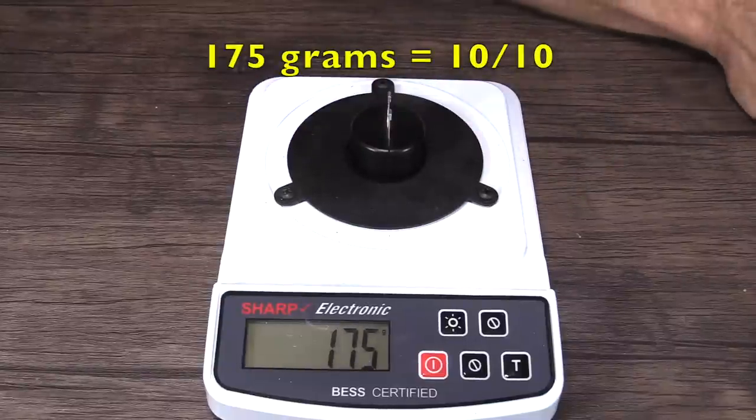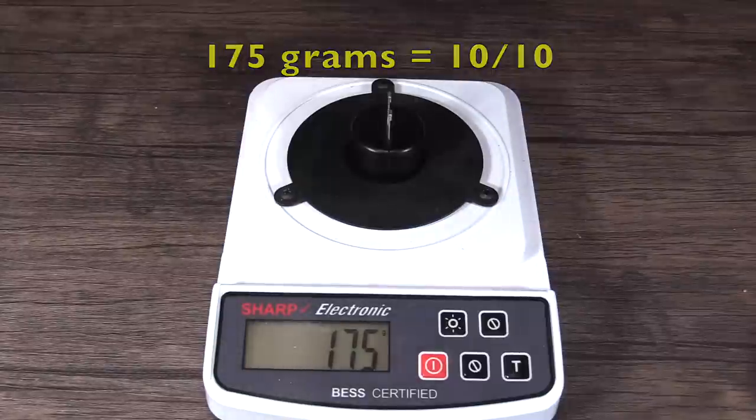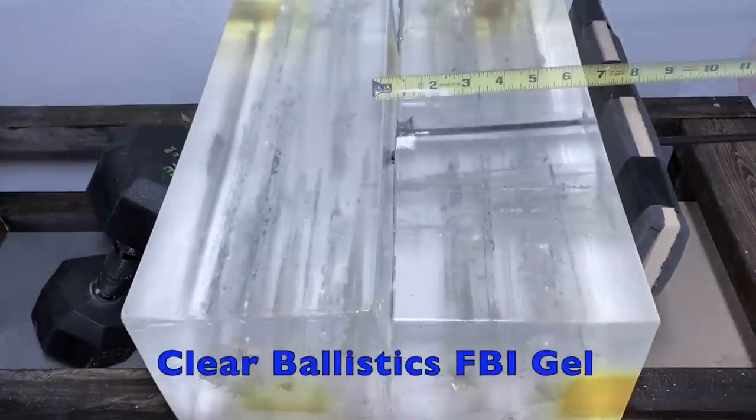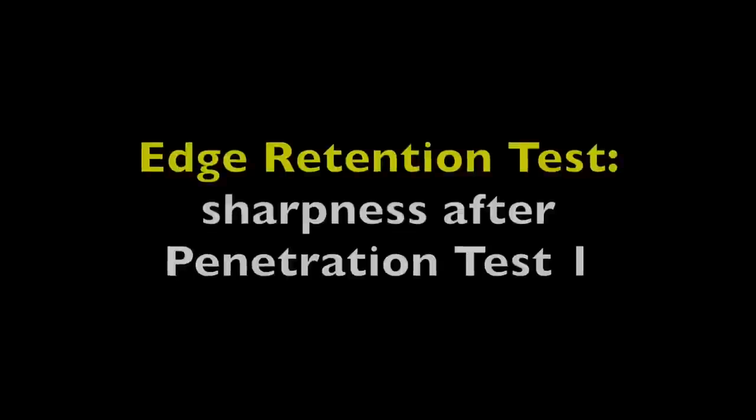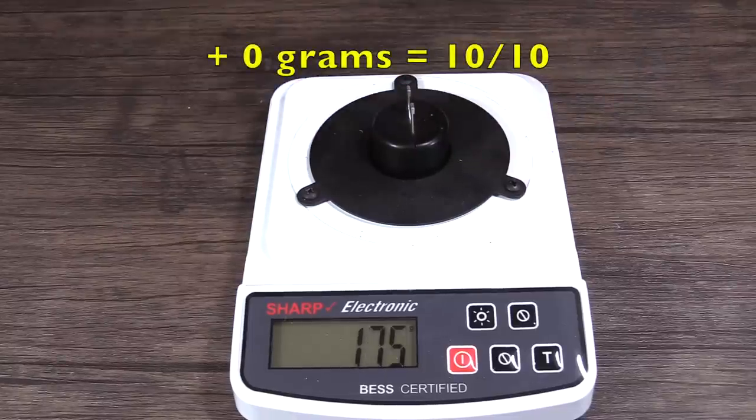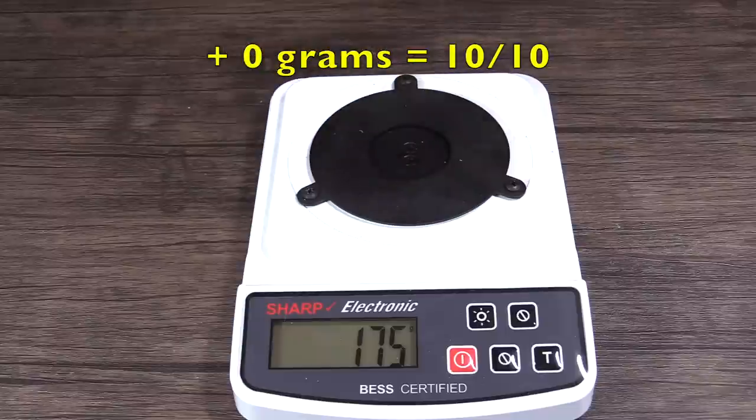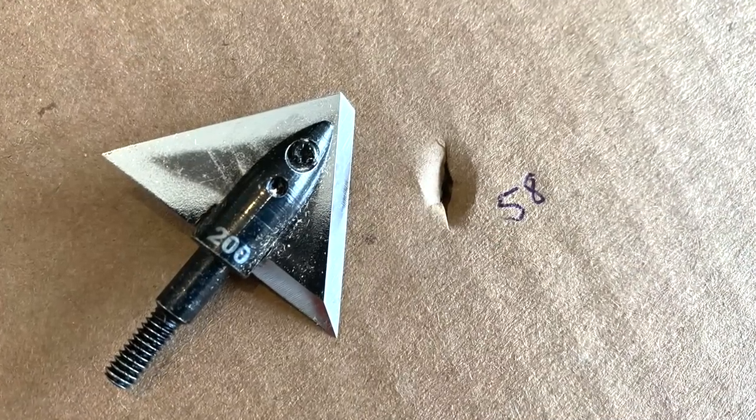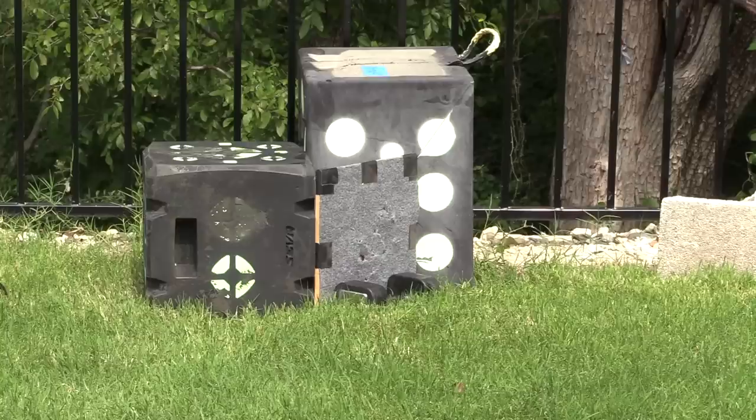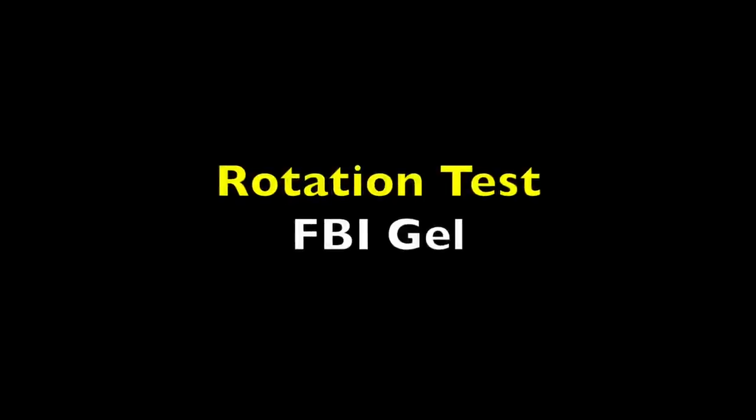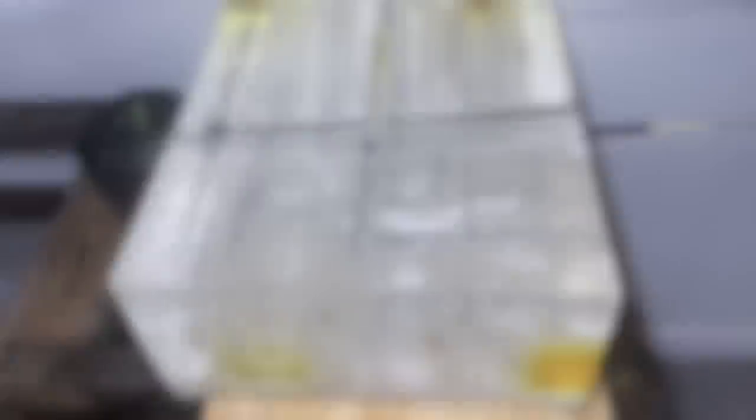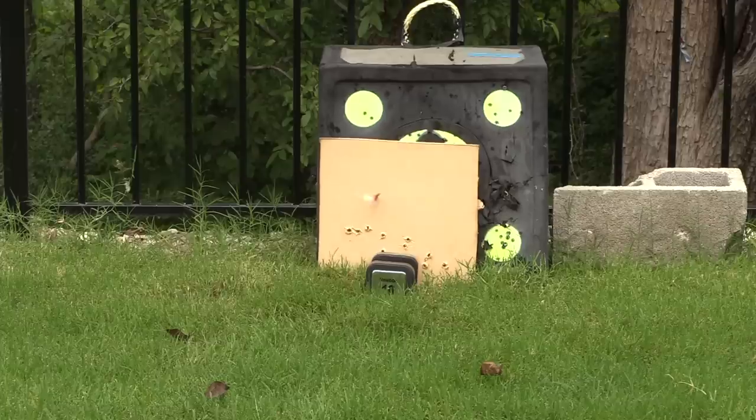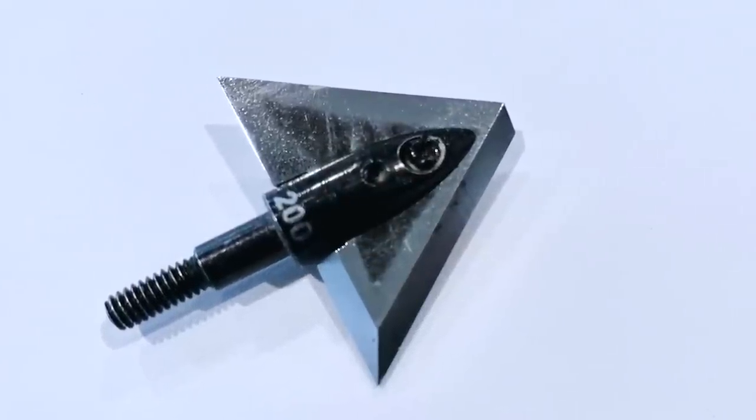It took 175 grams of force to cut through the wire, which is a 10 on a 10 point scale. It penetrated 8 inches. It took no additional force to cut through the wire, which gives it a 10 on a 10 point scale. It penetrated through 58 layers. It rotated 25 degrees at 13 inches.